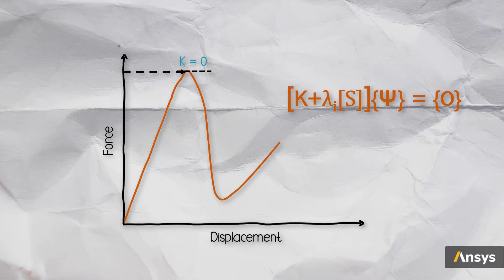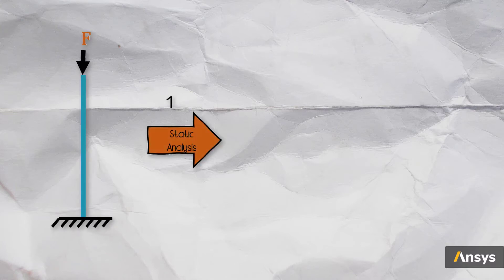Once solved, the outcome of this analysis is the load multiplier, lambda i, and the corresponding mode shapes, psi i. To solve this, first, a static analysis is performed with the nominal load applied to the structure. Then, the eigenvalues and the eigenvectors are solved for.